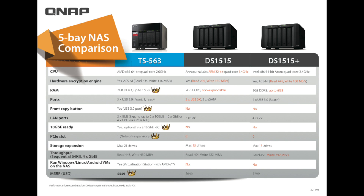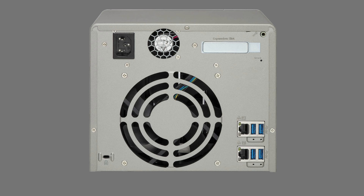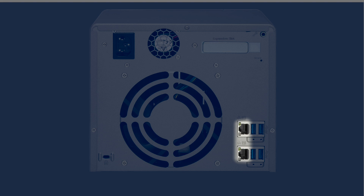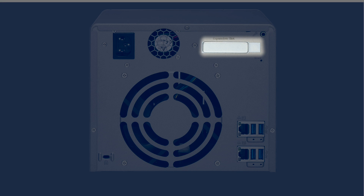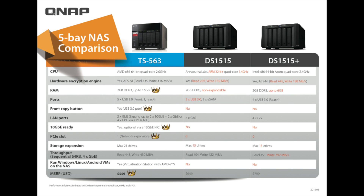Next, let's look at the LAN ports. The QNAP TS-563 comes with two gigabit ports, and you can connect a 10 GbE connection via a total of four gigabit connections through PCIe NIC cards. The DS-1515 comes with four gigabit ethernet connections, and the DS-1515+ also comes with four gigabit ethernet connections.